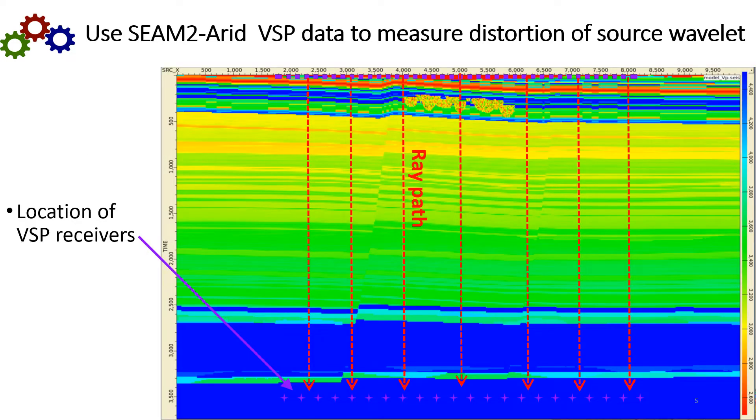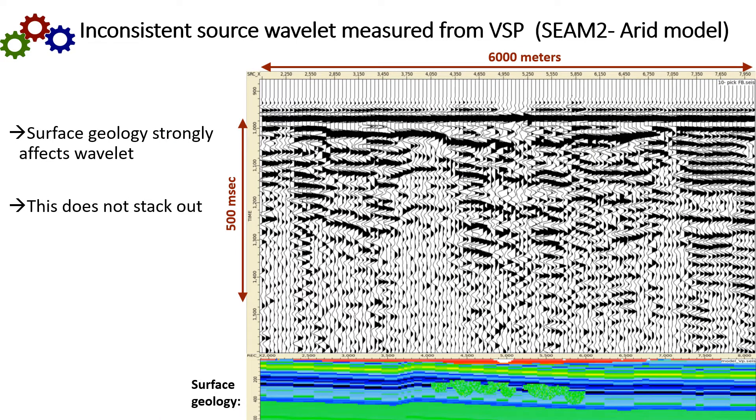We can demonstrate the source wavelet corruption with the SEAM model. Here we have a series of sources that are purple dots at the surface of the model. And then for each source we have one receiver directly below it at the bottom of the model. Now, there may be some inner bed multiples here, but they are weak compared to the effect of the surface variations.